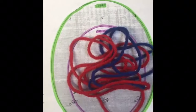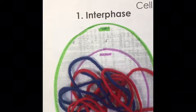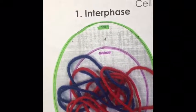The blue and red yarn which are in the nucleus of the cell represent the DNA. The messy DNA in the nucleus is called chromatin.